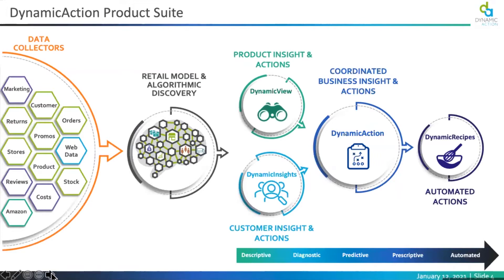Dynamic Action's suite is driven by a broad set of data collectors that are constantly drawing data from 150 different retail systems. They populate a retail-specific model that's deeply meshed and connected with customer data, product data, inventory data, and profit data that spans all of the channels mentioned.